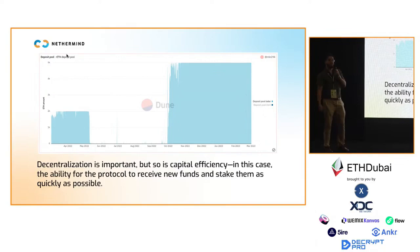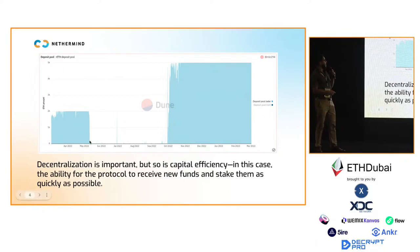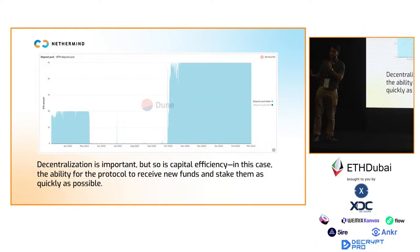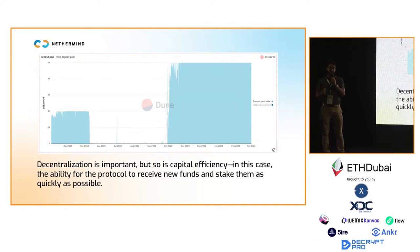Here's a chart of RocketPool's ETH deposit pool balance as a function of time over the last year. This represents stake sitting in RocketPool waiting to be staked. After October 2022, all the way to this month, the pool has been full for most of the time — 5,000 ETH sitting in the pool, unable to be staked, waiting for a node operator to come up with the collateral to spin up a new validator. We use this as evidence that capital efficiency — the ability to receive new funds and stake them as quickly as possible — is essential for market share.